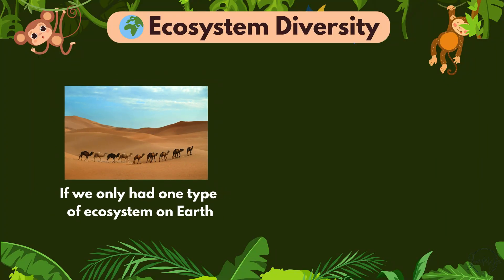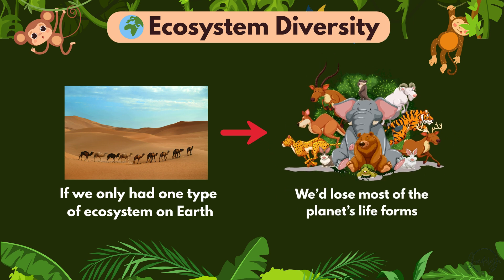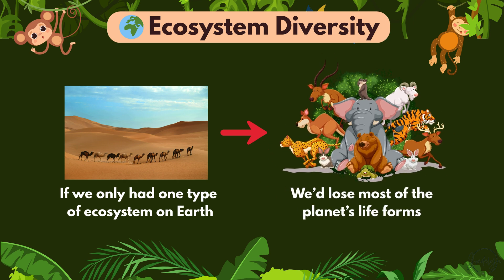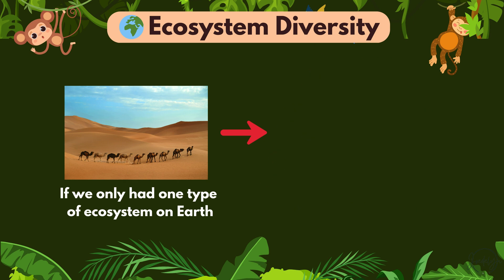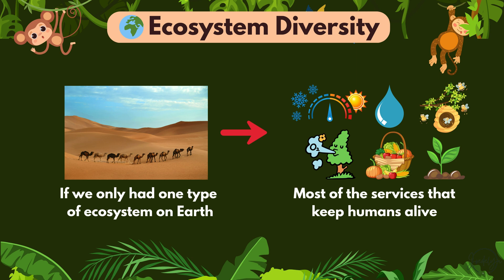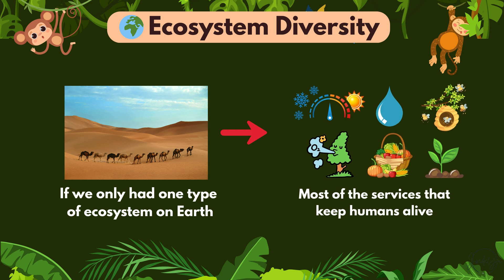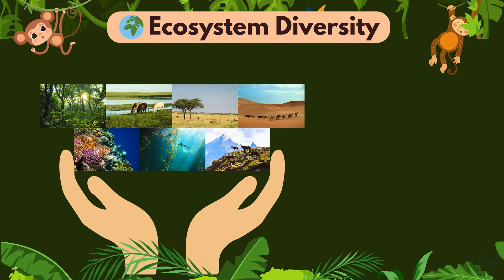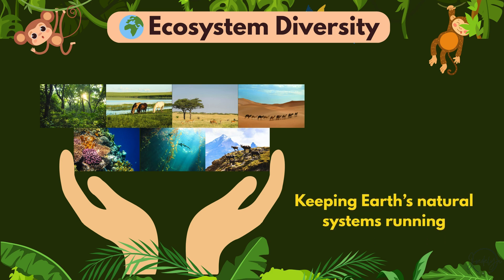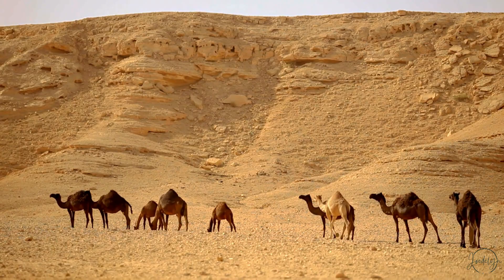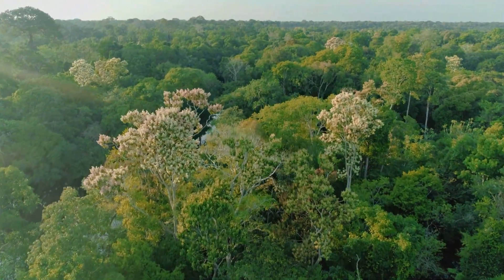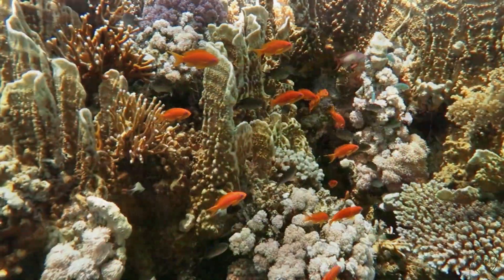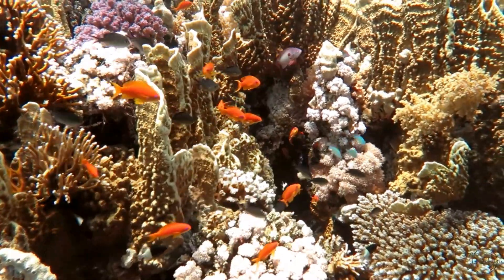If we only had one type of ecosystem on Earth, we'd lose most of the planet's life forms and most of the services that keep humans alive too. So protecting ecosystem diversity is about keeping Earth's natural systems running across deserts, rainforests, coral reefs, and beyond.